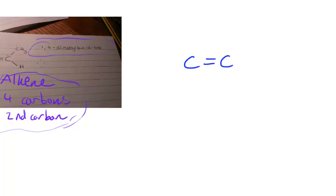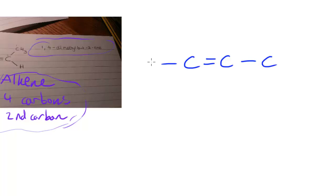So this is 1,4-dimethylbutene. The 'butene' part suggests that we've got a molecule of butene, so I'm going to draw it in a straight line rather than drawing the actual kink — just so that it's easier to draw the branches.